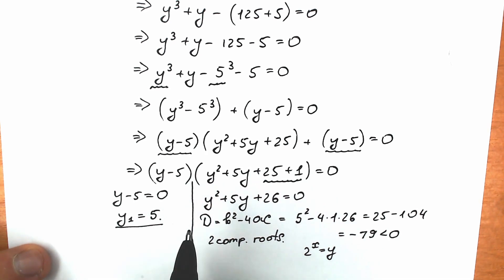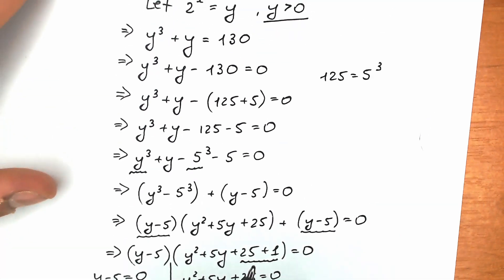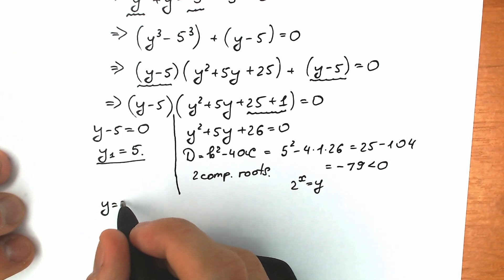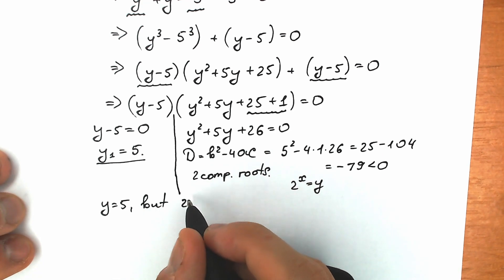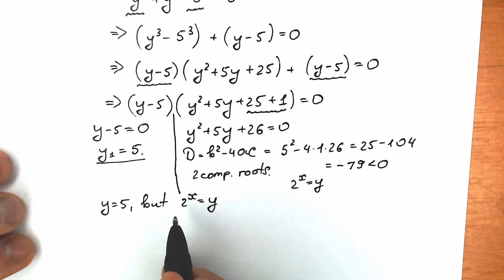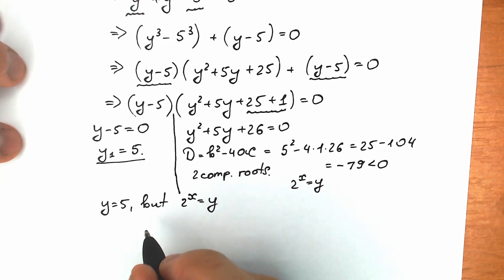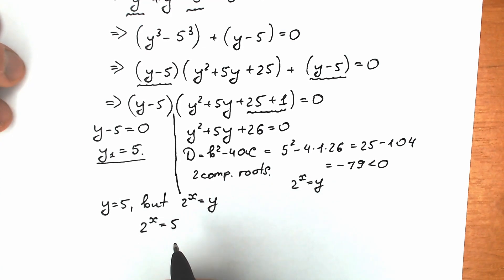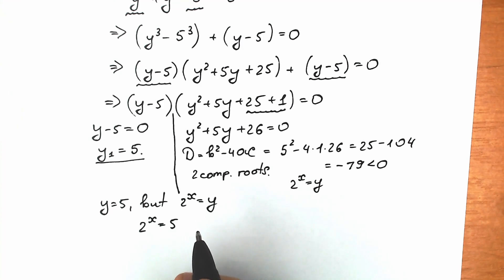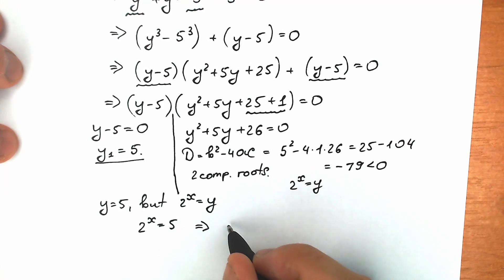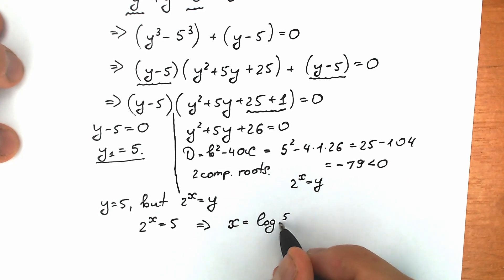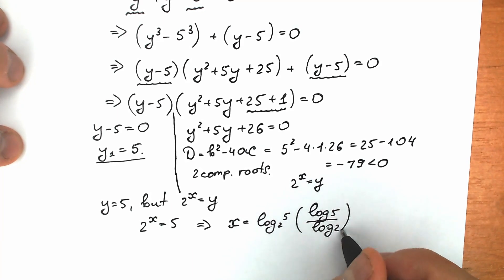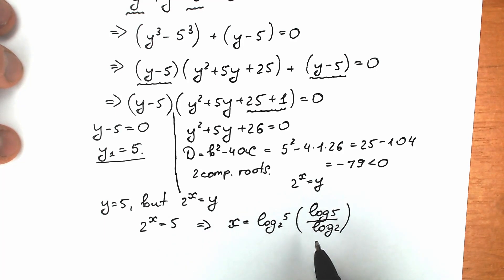We need to plug y equals 5 back into our substitution 2 to the x equals y. So we have 2 to the x equals 5. Using the basic logarithm definition, x equals log base 2 of 5, or equivalently log 5 over log 2.